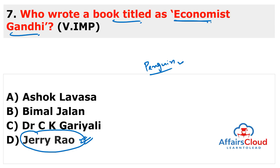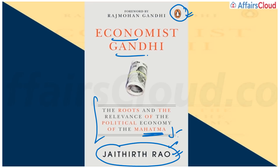The book highlights Gandhiji's views on religion, ethics, humans, nature, education, and society. It describes that Mahatma Gandhi was not against businessmen or capitalists but had a positive approach toward business — which may change the perspective of Gandhiji's ideology for many. Remember: the book is written by Jerry Rao (Jayatirath Rao).